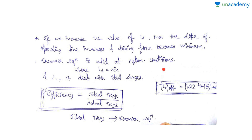The Kremser equation is valid at equilibrium conditions where LS equals minimum, and it gives ideal stages. Efficiency = ideal stages / actual stages, and the ideal stages are found using the Kremser equation. In exam problems, you'll be given an absorber and asked to find actual stages: use the Kremser equation to get ideal stages, then apply the given efficiency (e.g., 60% → 0.6) to find the actual number of stages.